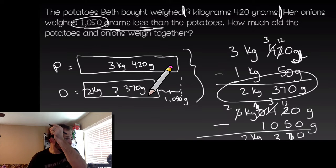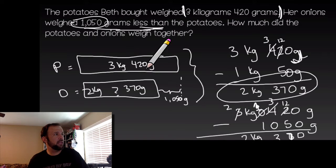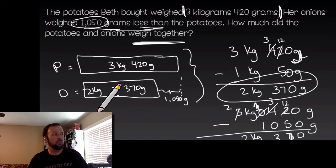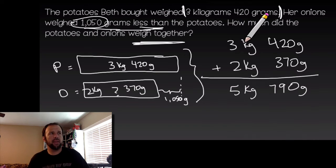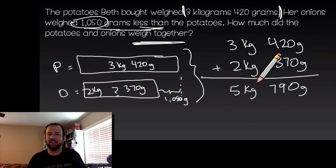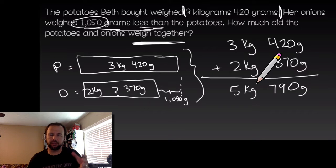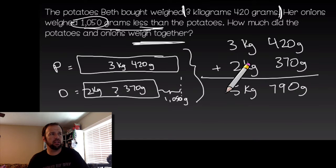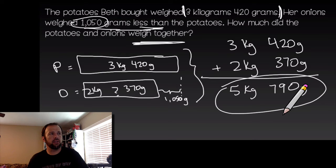That's how much the onions weigh — 2 kilograms 370 grams — but we already have the potatoes too. We want to know how much they weigh together, so we add: 3 kilograms 420 grams plus 2 kilograms 370 grams equals 5 kilograms 790 grams. Nothing needs to be regrouped there. The potatoes and the onions weigh 5 kilograms 790 grams. Excellent job!